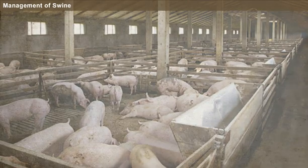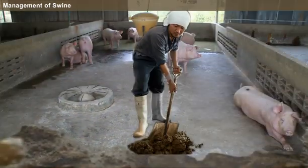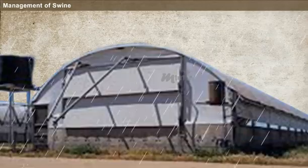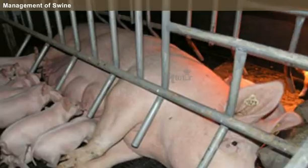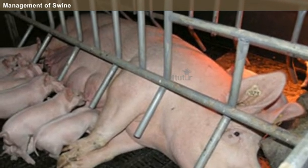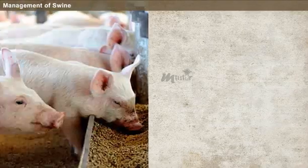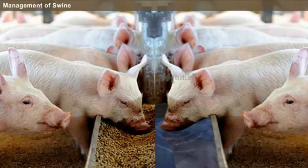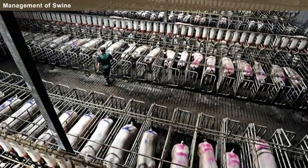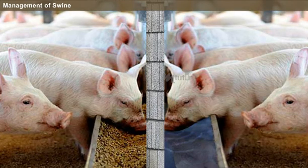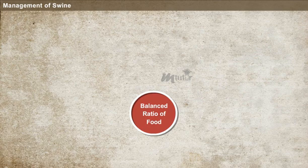Concrete floor with a rough surface should be established for easy cleaning. The roof must be waterproof. Guard rails should be provided in the farrowing house to avoid piglet mortality due to crushing. Feeding and watering troughs should be provided in each pig chamber. A dividing wall should be made between the feeding trough and water trough. One side of the dividing wall should be used for supplying water, while the other side should be used for fodder purposes.